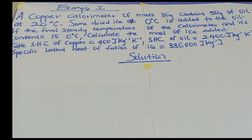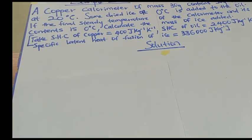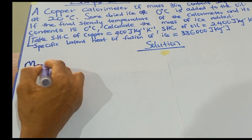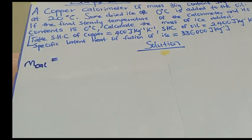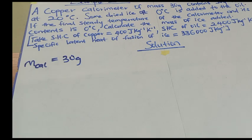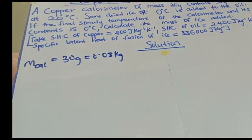Let's look at this example. A copper calorimeter of mass — the first thing is to write out the parameters you are given. Mass of calorimeter is 30 grams, which we convert to kg by dividing by 1000 to get 0.03 kg.